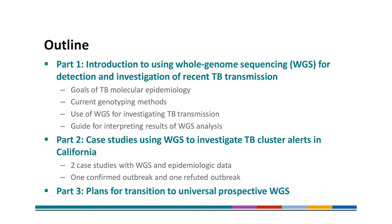This presentation is divided into three parts. Part one is an introduction to using WGS for detection and investigation of recent TB transmission. I will cover the goals of TB molecular epidemiology, current genotyping methods, use of WGS for investigating TB transmission, and a guide for interpreting results of WGS analysis. Part two will be case studies using WGS to investigate TB cluster alerts in California — Martin and Tambi will present two case studies, one a confirmed outbreak and one a refuted outbreak. Then in part three, I will briefly describe the plans for transition to Universal Prospective WGS. A separate presentation covering the details of how Universal Prospective WGS will be implemented will be made available in the future.